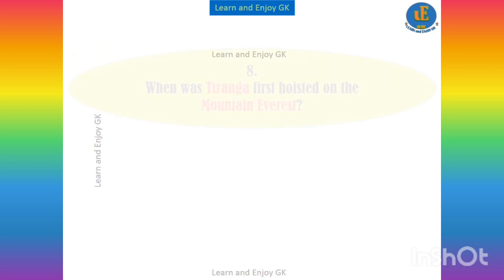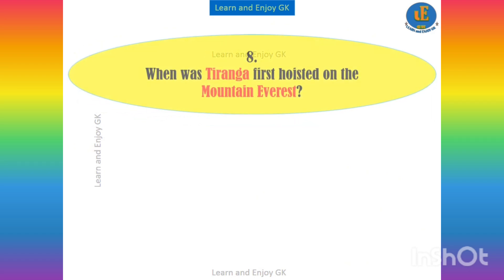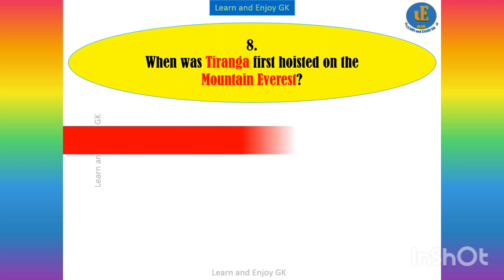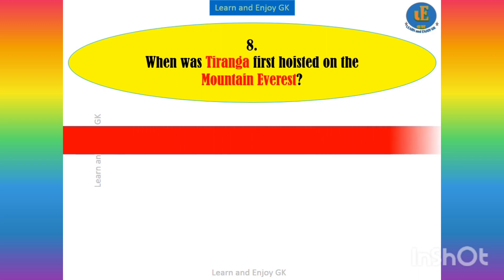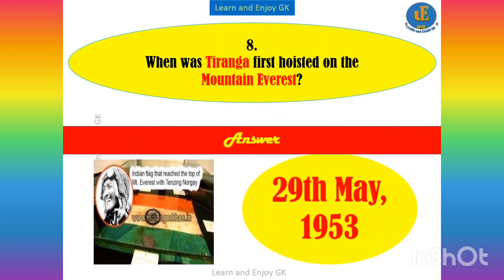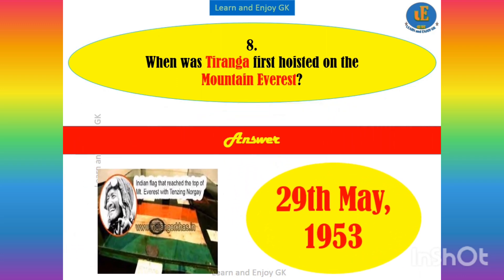When was Tiranga first hoisted on the mountain Everest? Answer: 29th of May, 1953.